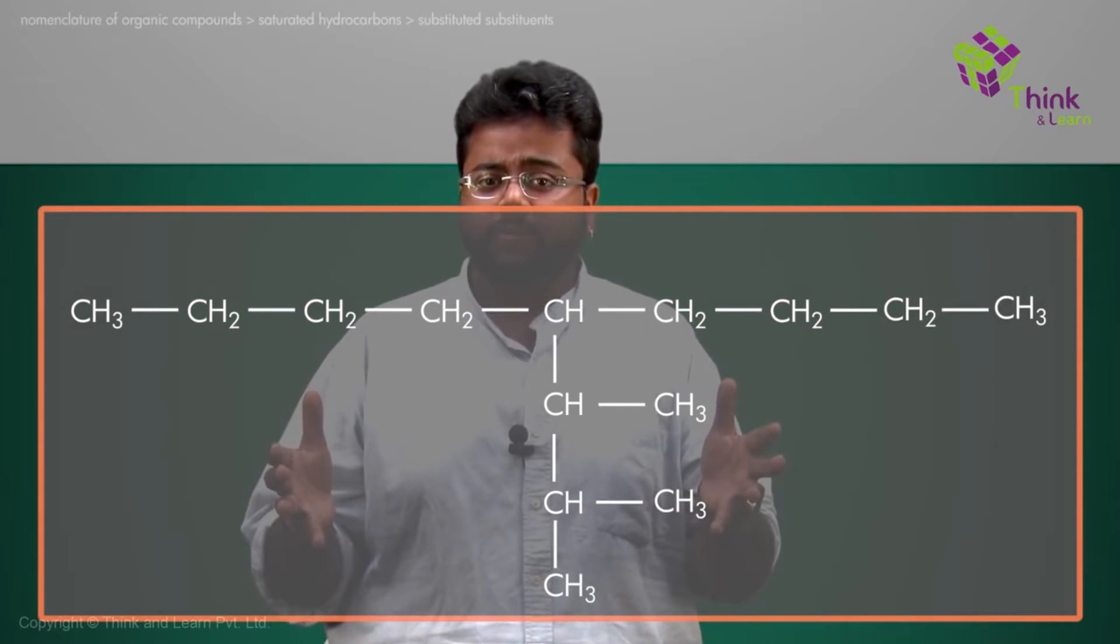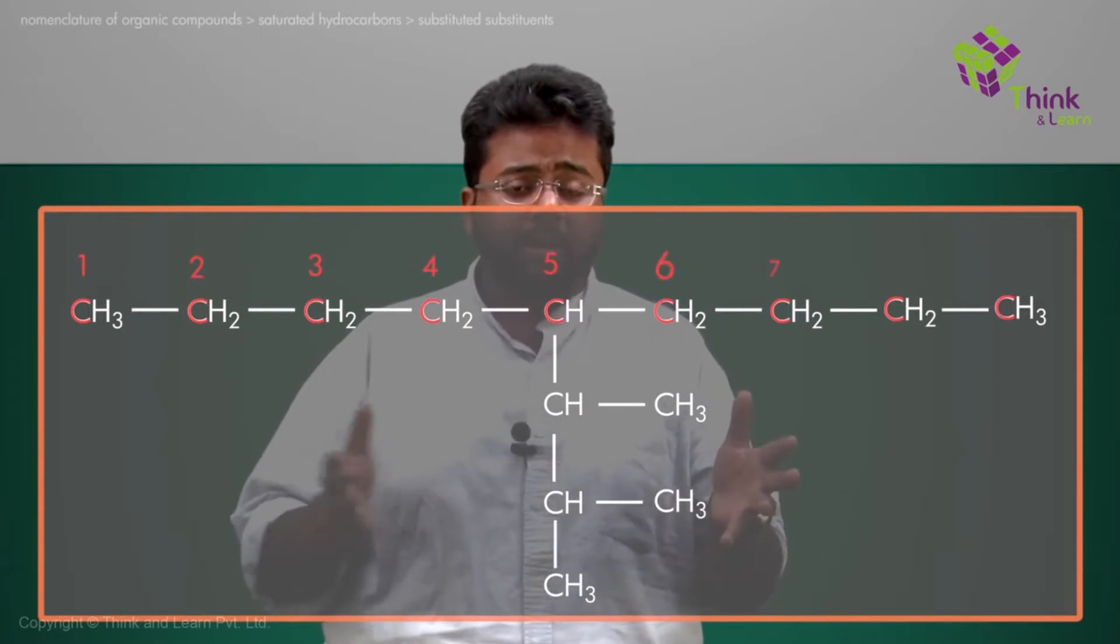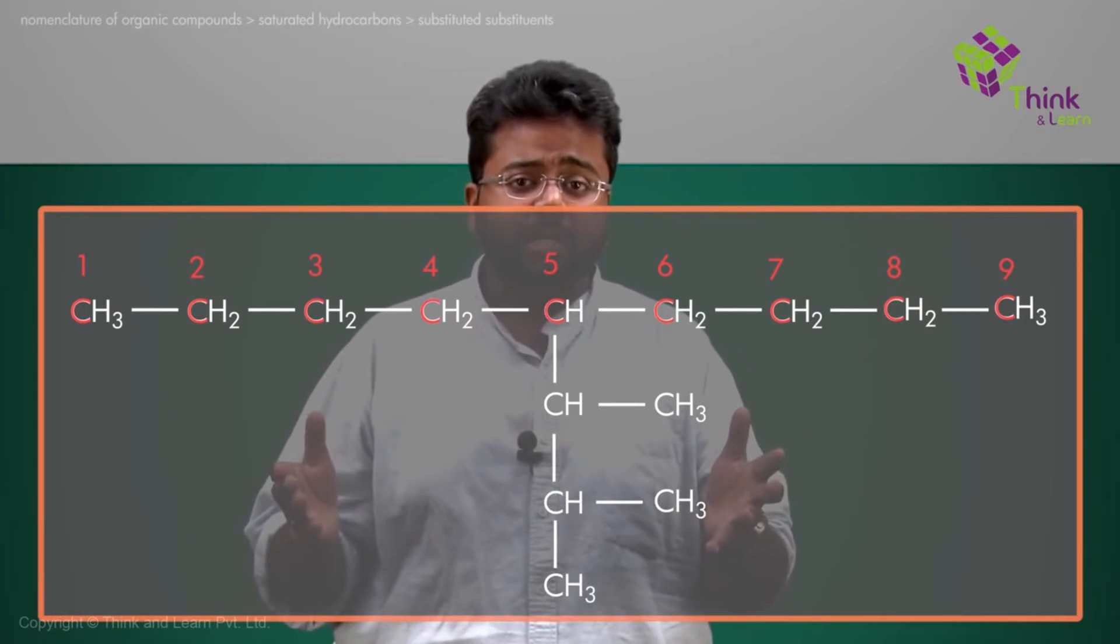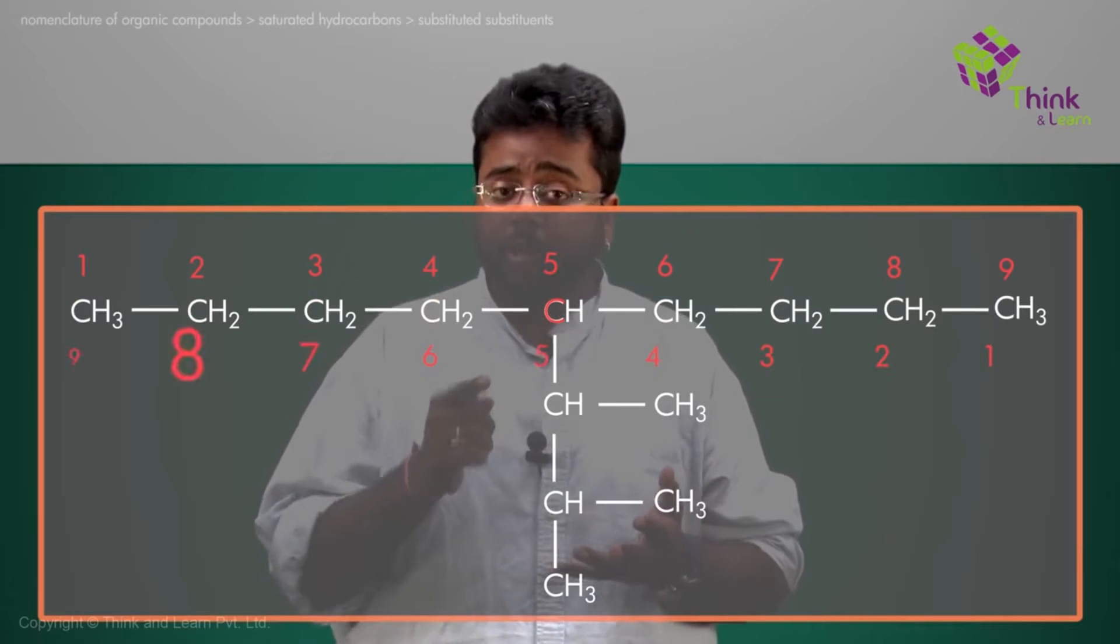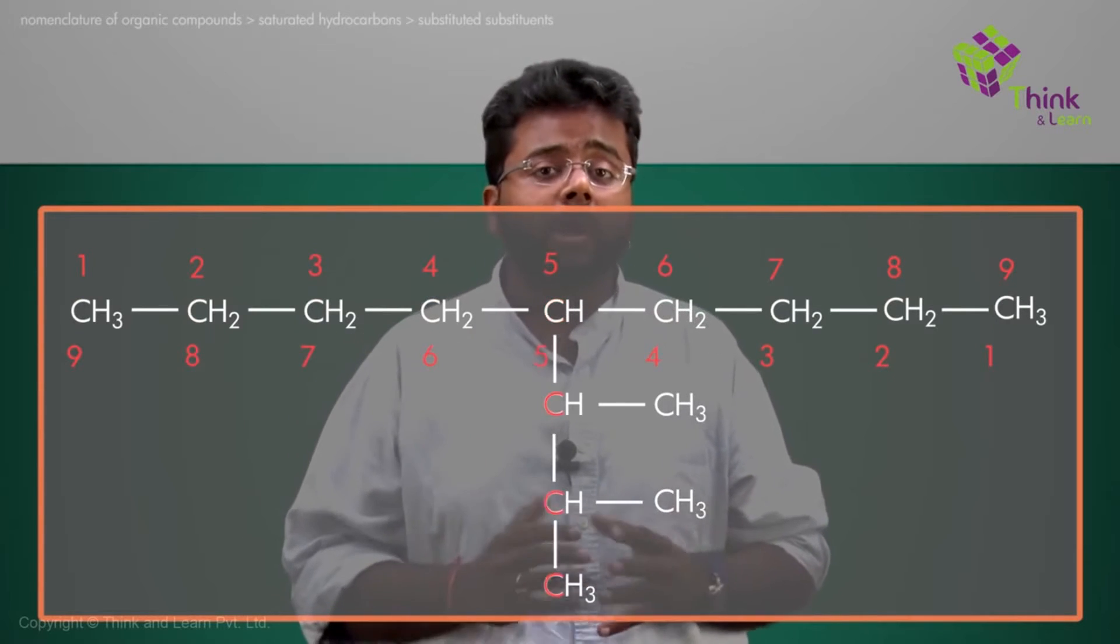I have a compound something like this. Now you see there are nine carbons in the straight chain, and on the fifth carbon, either from the right side or the left side, you have three more carbons attached.